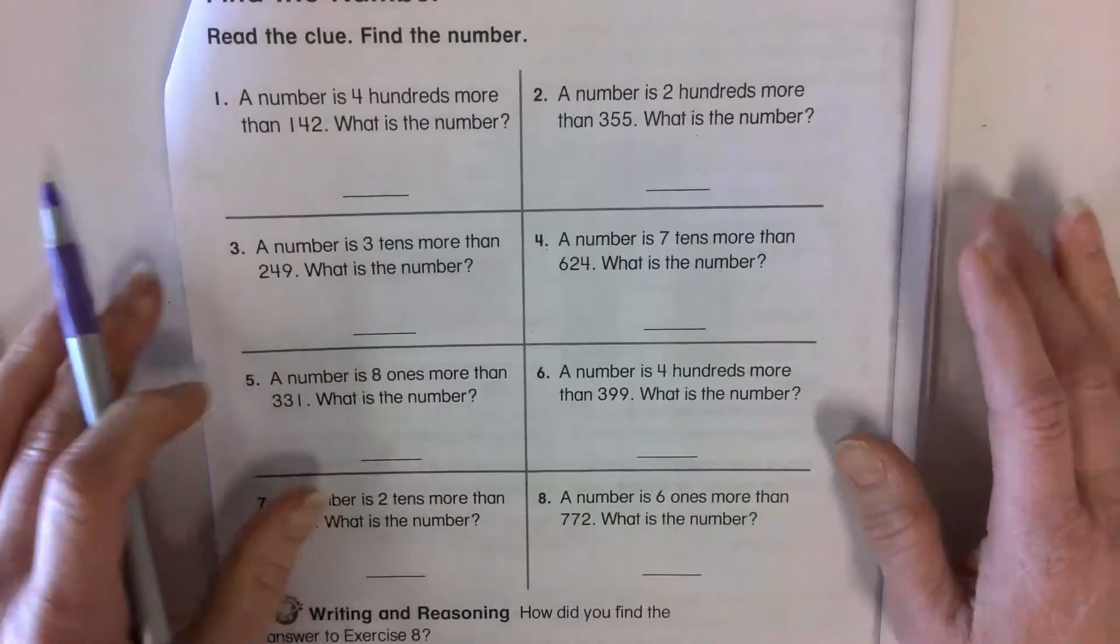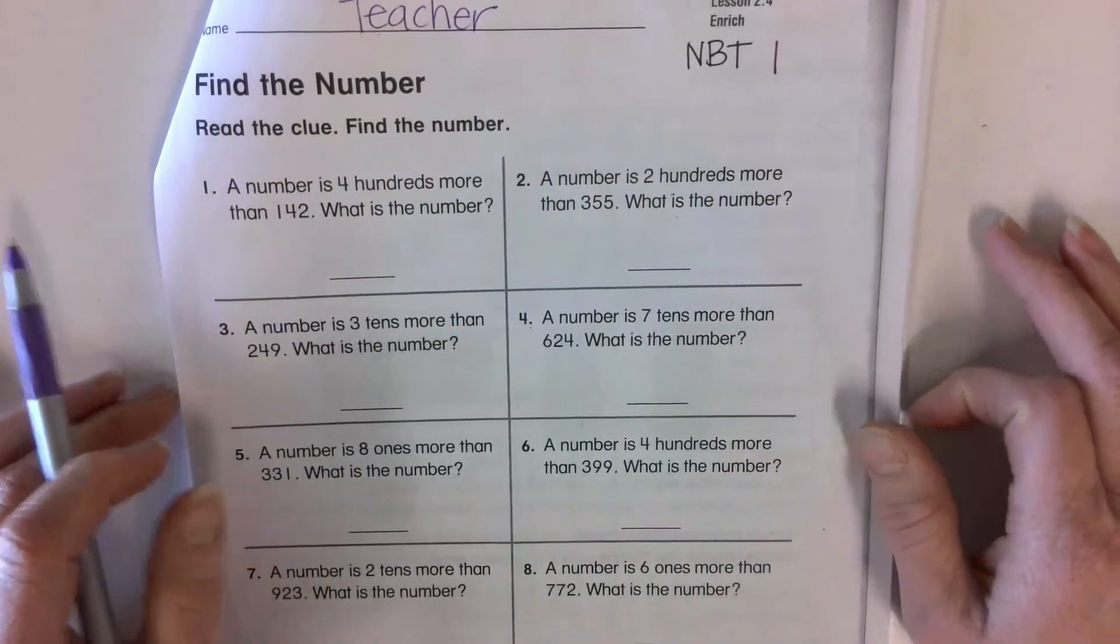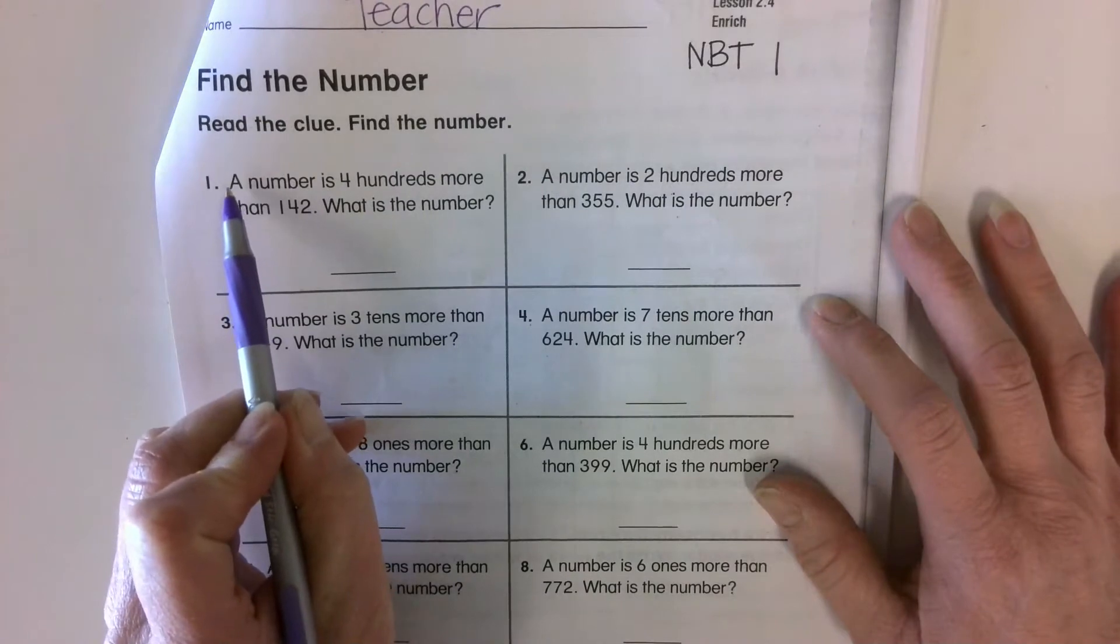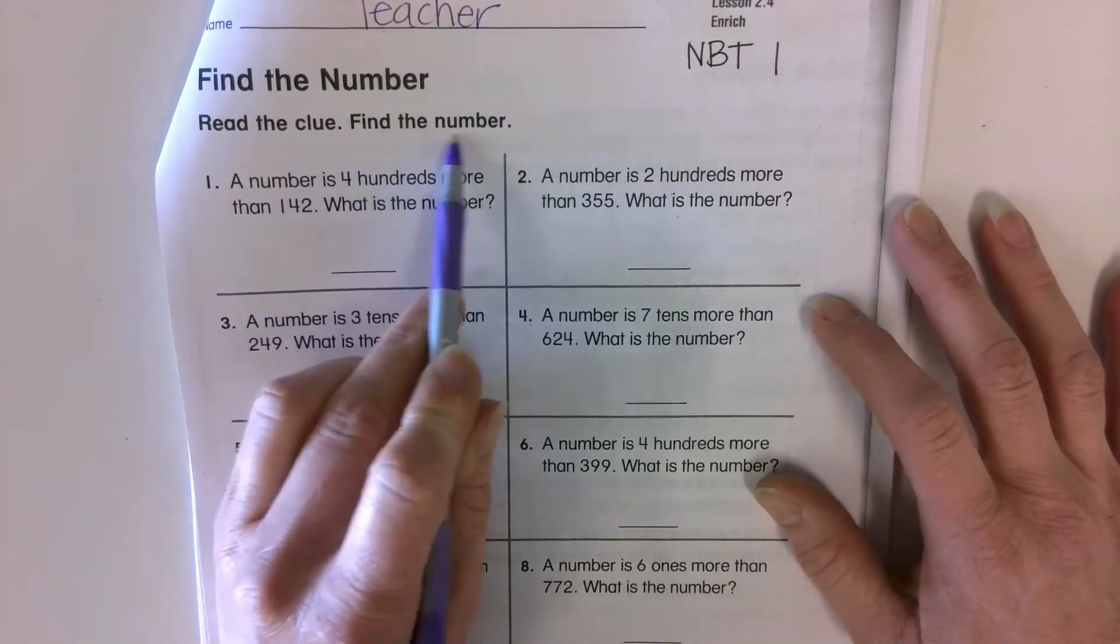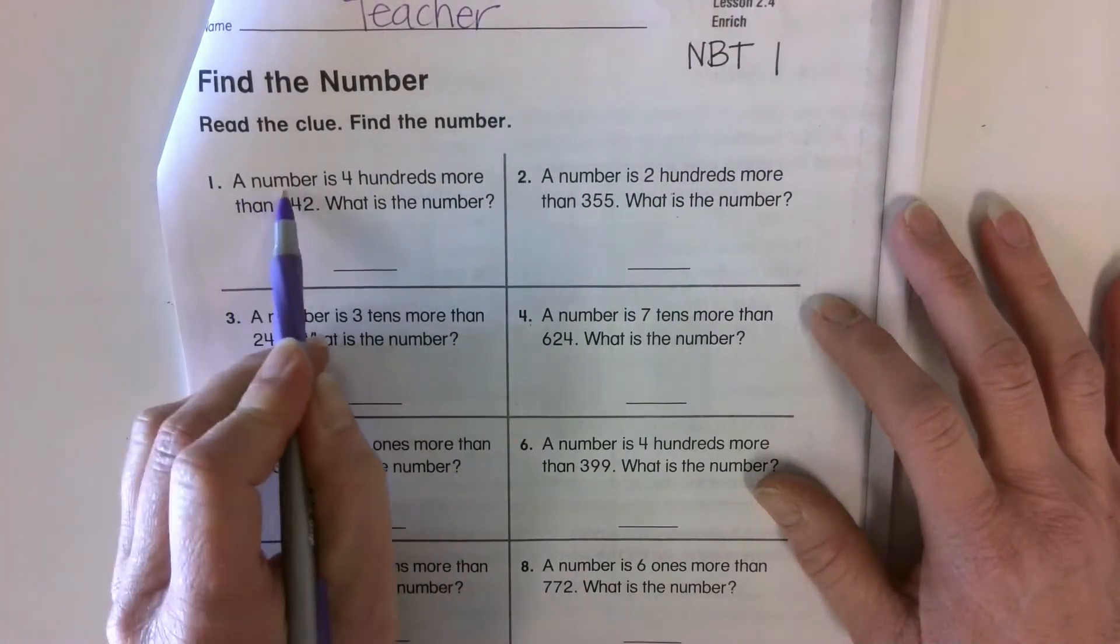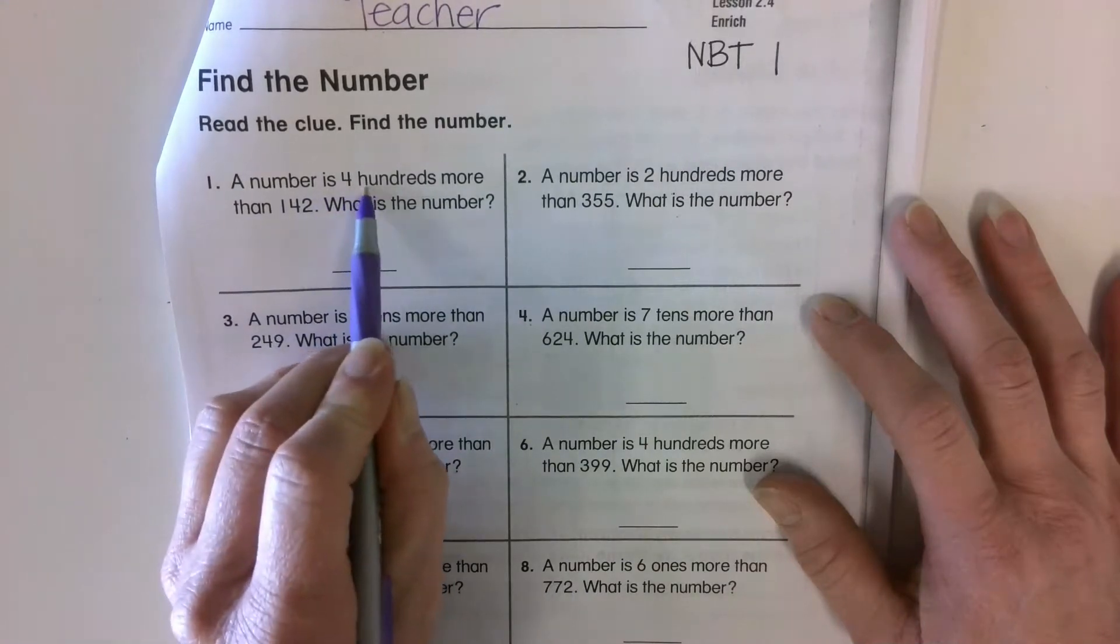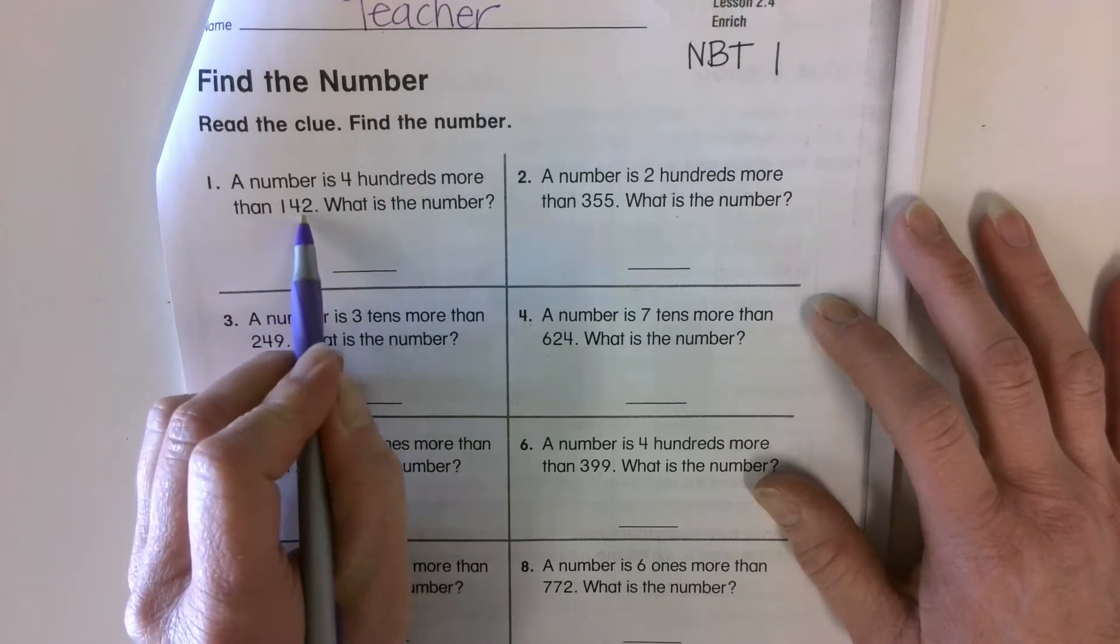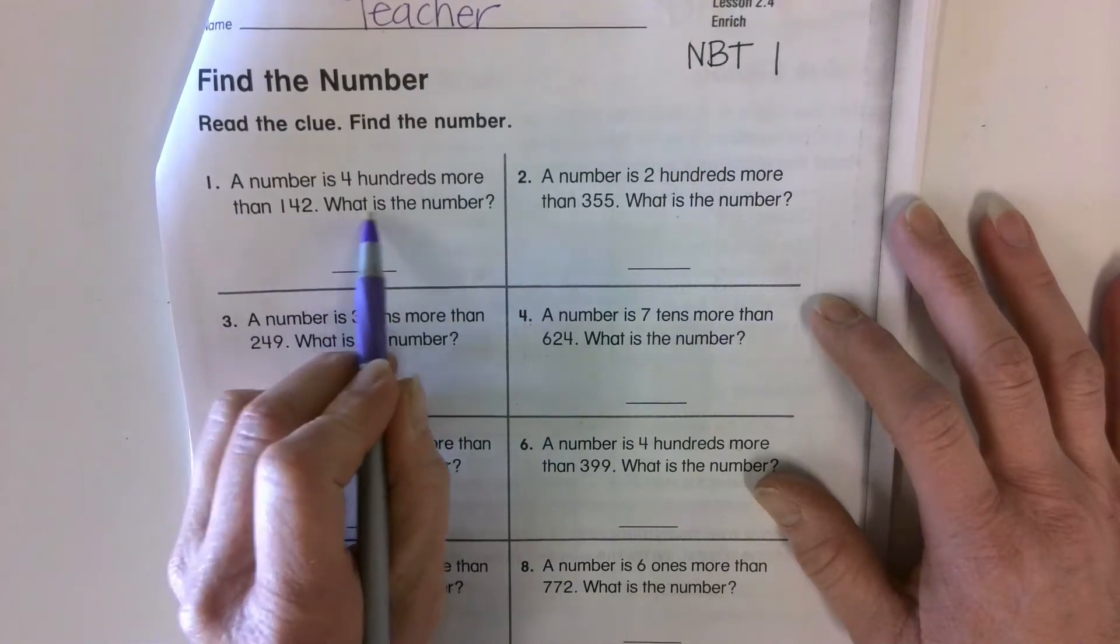I'm just going to go over the directions with you really quick on how to do this. So it says, read the clue, find the number. A number is four hundredths more than 142. What is the number?